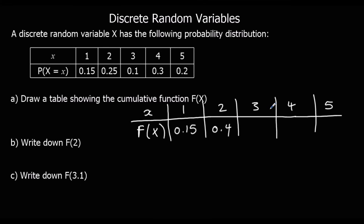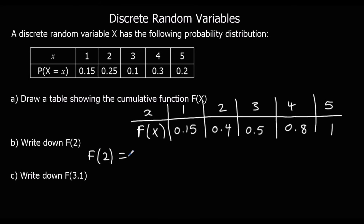For x = 3 we add probabilities of 1, 2 and 3, giving 0.5. For x = 4 we add probabilities of 1, 2, 3 and 4, giving 0.8. By the time we get to x = 5, all probabilities are added up, so it equals 1. F(3) means everything up to and including 3 — that includes x = 1, 2 and 3 — so that's 0.5.